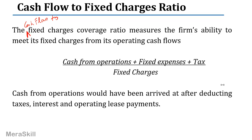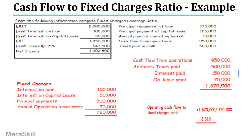Using the same example for the Cash Flow to Fixed Charges Ratio: cash flow from operations after tax is $950,000. We add back taxes paid of $500,000, interest paid of $150,000, and operating lease payments, arriving at cash from operations of $1,670,000. The operating cash flows to fixed charges ratio comes out to approximately 2.31 times. The cash flow is slightly lower than the profits, which is a concern — are you generating enough cash to meet all your fixed charges?